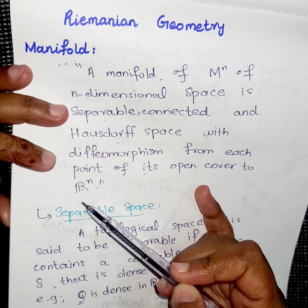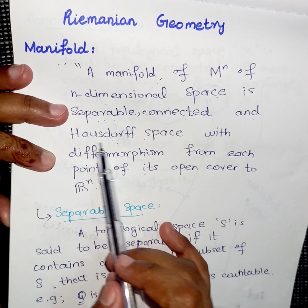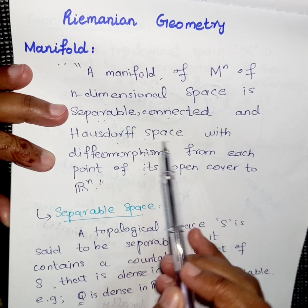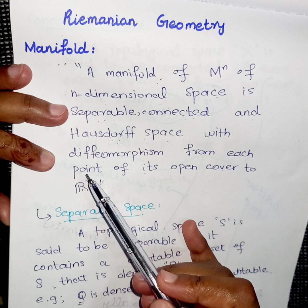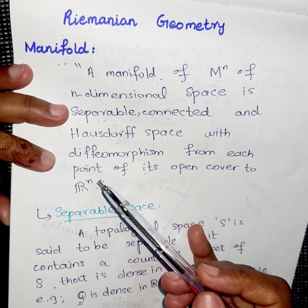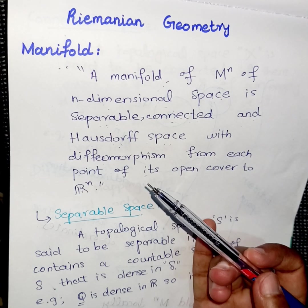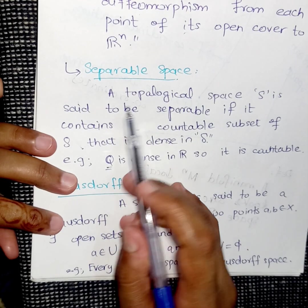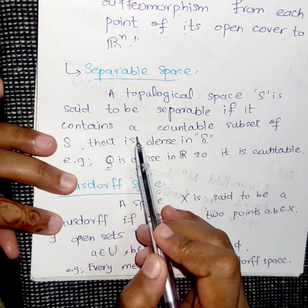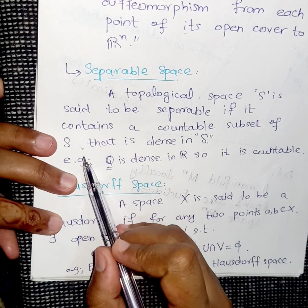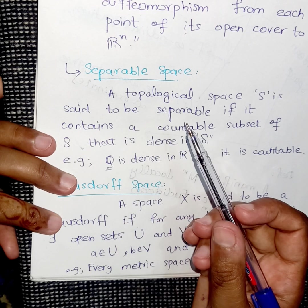These terminologies — separable, connected, and Hausdorff space — come from topological spaces. We will first define each of them and then see how they work in the definition of a manifold. A topological space is said to be separable if it contains a countable subset that is dense in S.